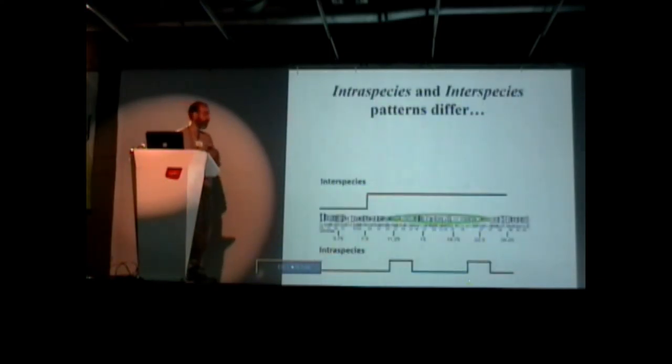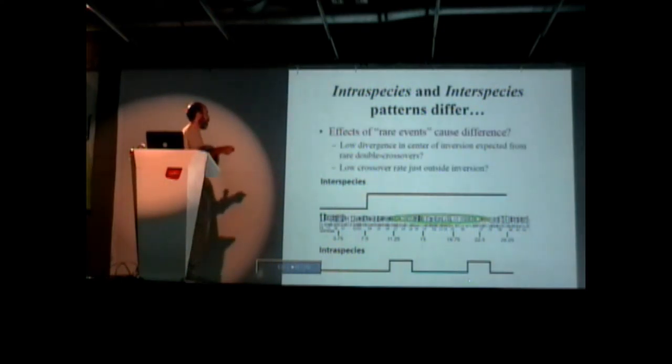So why might that be? I'll show you what this looks like. So interspecies, if this is position on your chromosome, this is how much difference there is. Between species, it goes up about two and a half megabases and stays high. Within species, it's only high just inside the inverted region. That's a very unusual pattern. Why might that be? Well, we have a hypothesis.